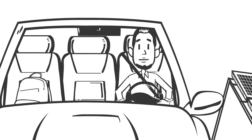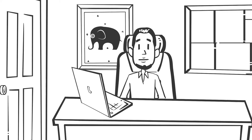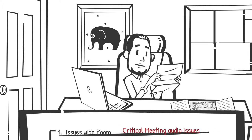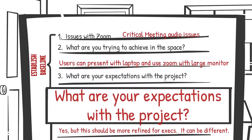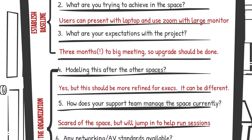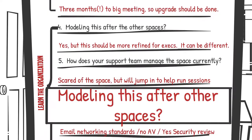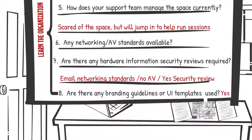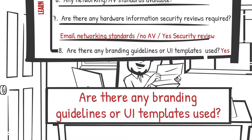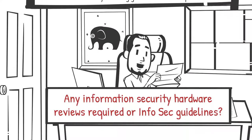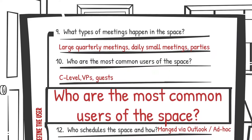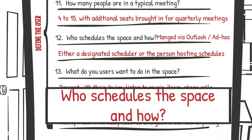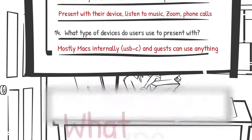I probably need to review those questions that I asked — I asked a lot, and one led to the other. We started off by covering issues with Zoom, then I asked some baseline questions: What are you trying to achieve in the space? What are your expectations with the project? Then I dived into learning about the organization: Are you modeling this after other spaces? How does your support team manage the space currently? Are any networking or AV standard documents available? Any branding guidelines or UI templates? Any information security hardware reviews or InfoSec guidelines? Then I asked about the end users: What type of meetings happen in the space? Who are the most common users? How many people are in a typical meeting? Who schedules the space and how? What do users want to do? What types of devices do users present with?